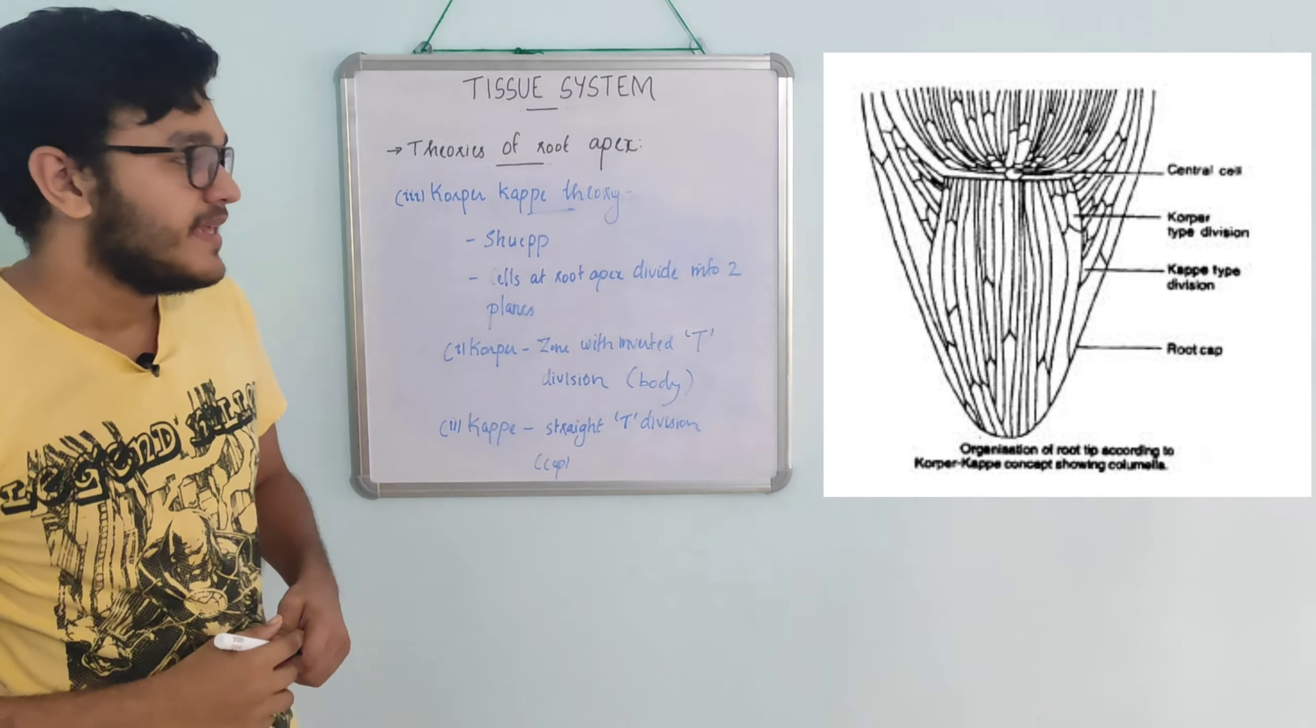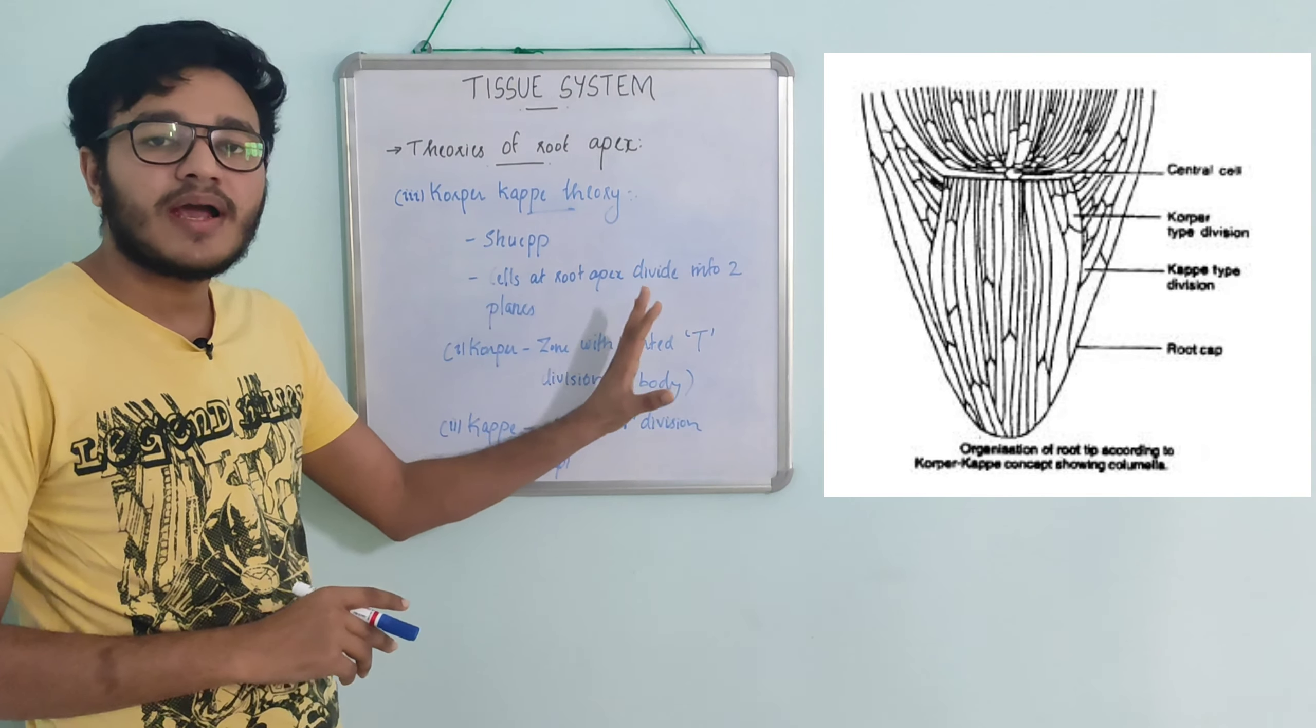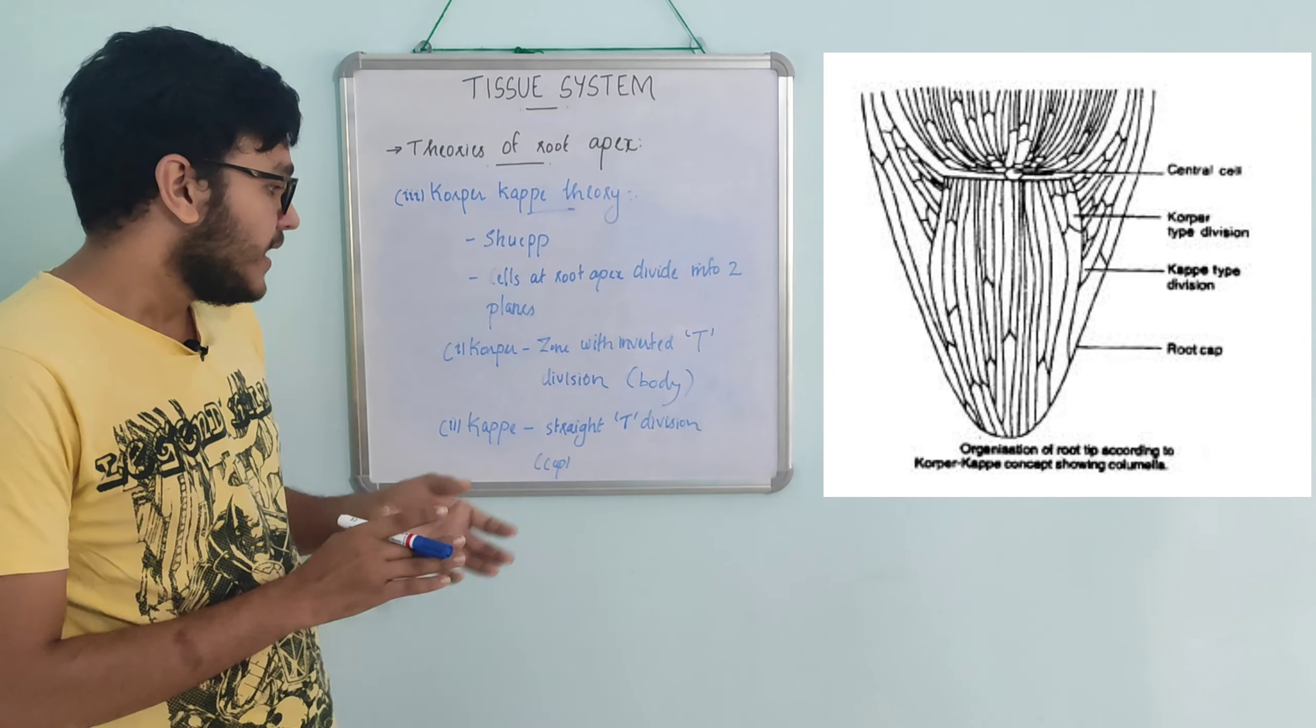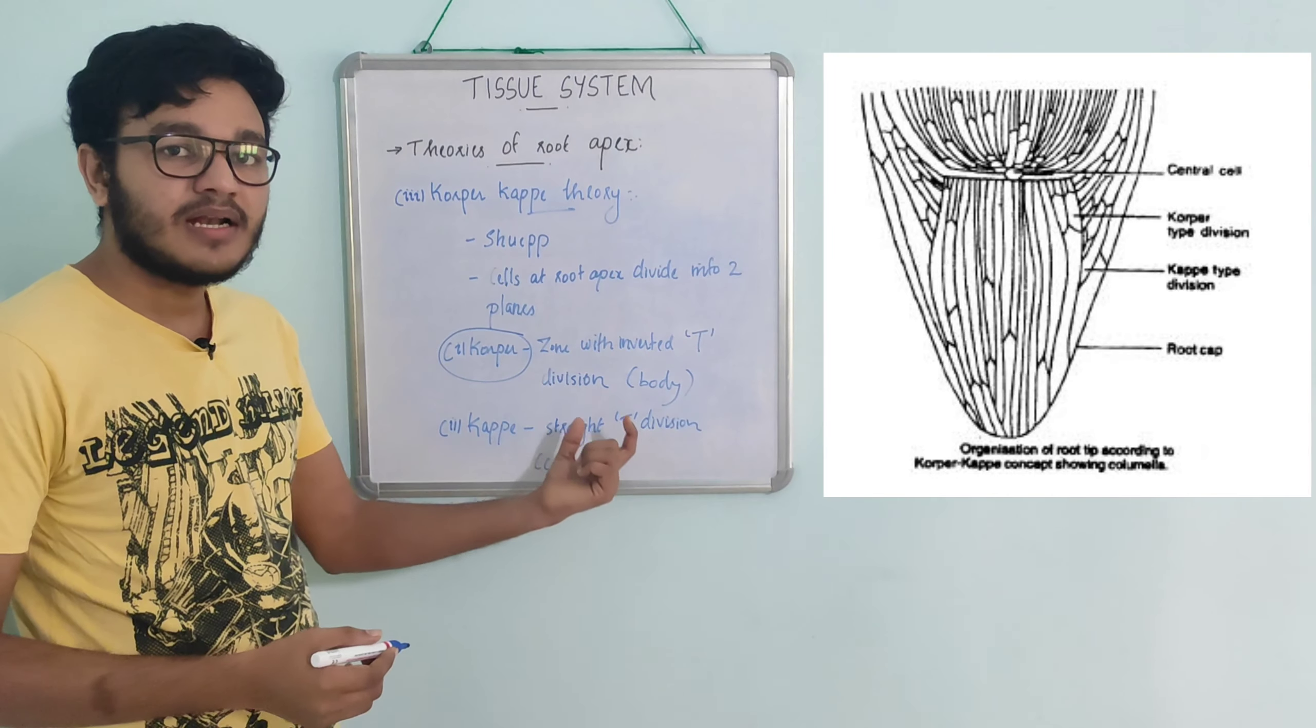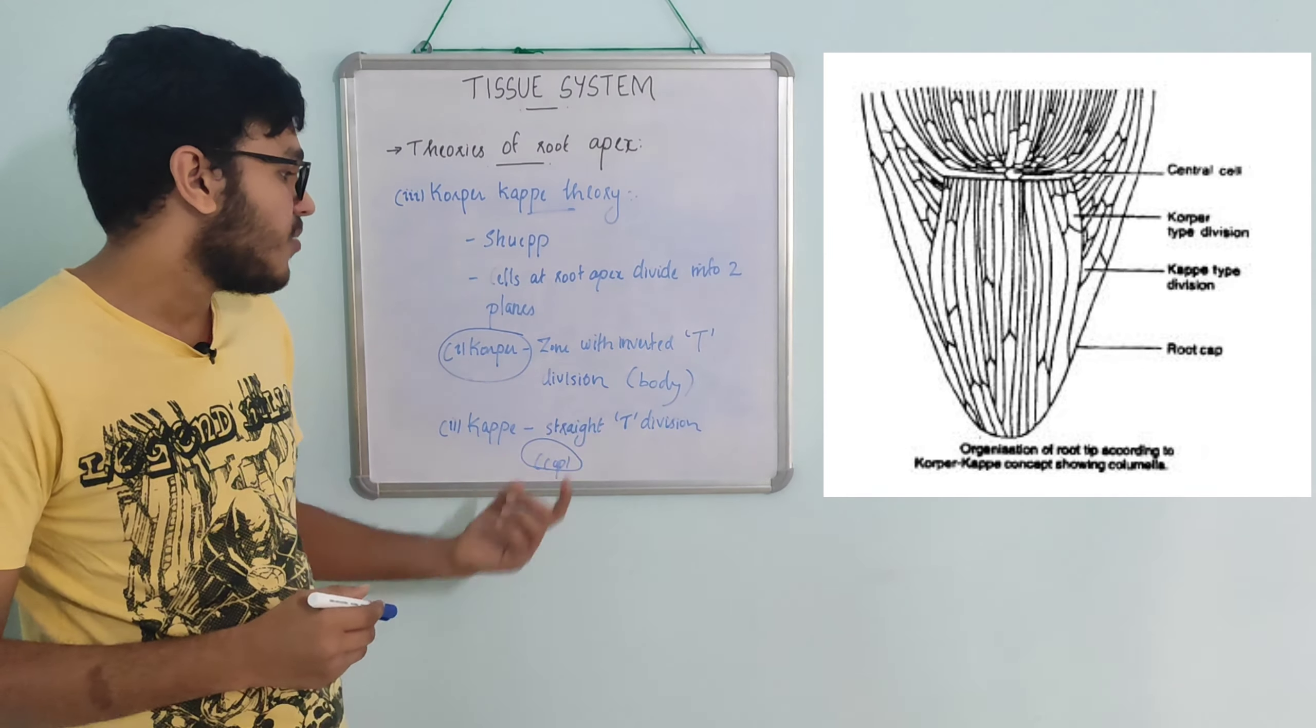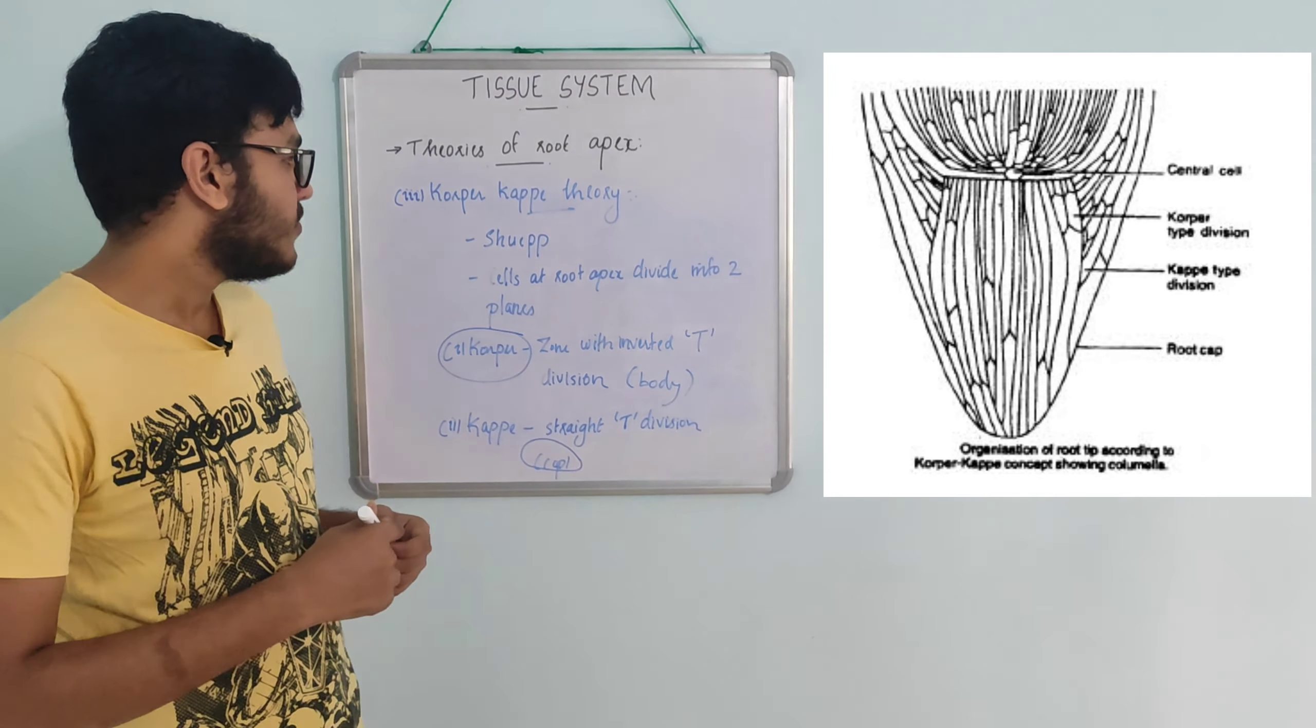The third theory is the Korper-Kappe theory, proposed by Schuepp. This divides the root apex into two zones based on cell division patterns. The corpus undergoes divisions in all planes, while the kappe shows primarily anticlinal divisions. The body shows periclinal divisions while the cap region shows different division patterns.